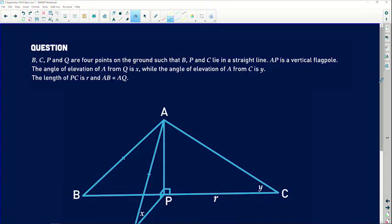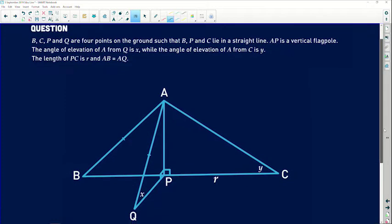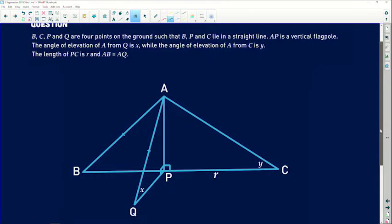We're sent to ask by Tabitha and see what the story is with this particular exciting question. So we are told that B, C, P, and Q are four points on the ground such that B, P, and C lie in a straight line. Now before we even go far, this is very important for us to understand.